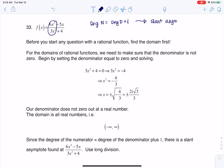Sometimes you'll hear it referred to as an oblique asymptote - same idea. In order to find the equation of that oblique asymptote, you're going to want to use long division.